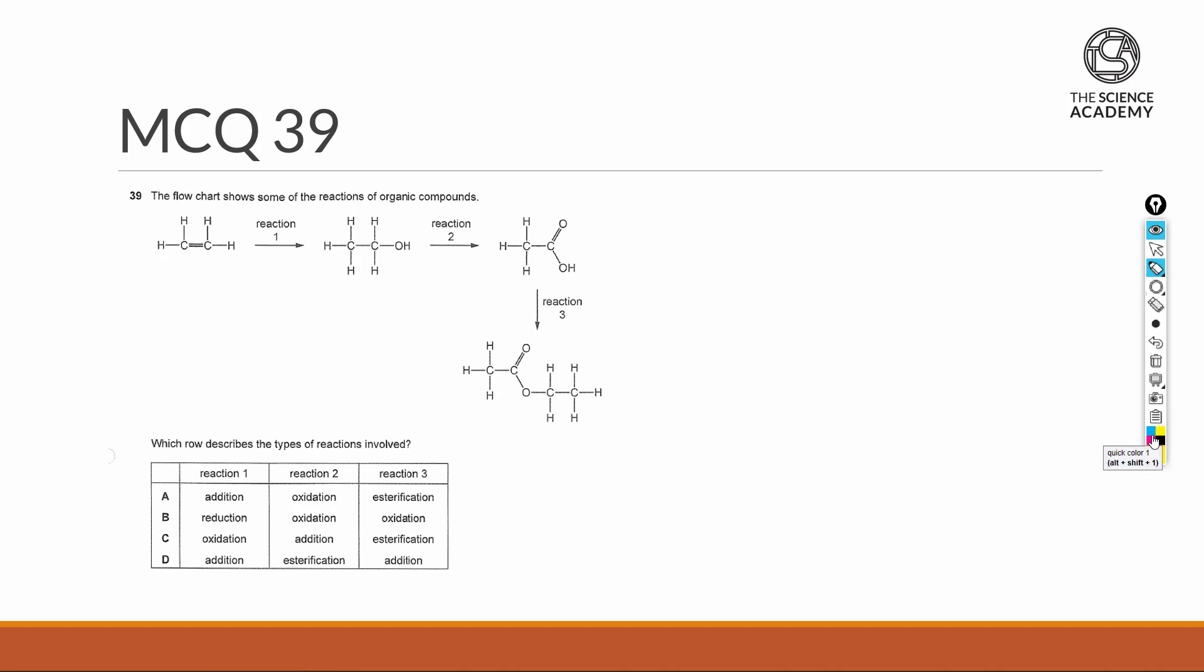First compound we have an alkene, an alcohol for the second compound, a carboxylic acid for the third compound, and finally an ester functional group for the last compound. So writing up: I have an alkene followed by an alcohol followed by a carboxylic acid.